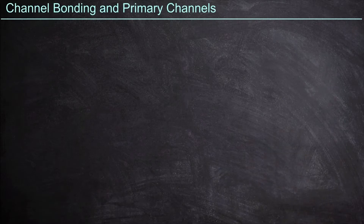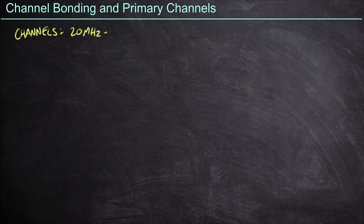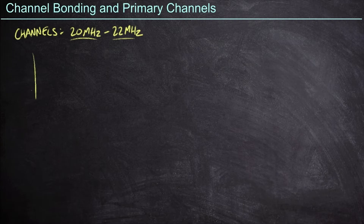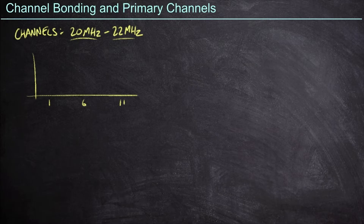So how exactly does this channel bonding process work? For the most part in the wireless world, we have channel sizes of what we would call 20 megahertz. In the 2.4 gigahertz space, this is actually 22 megahertz, but we typically call them 20 megahertz channels. The goal here is to take two adjacent channels and bond them together. In the 2.4 gigahertz space, for example, I've got channels 1, 6, and 11 as my primary non-overlapping channels, and I can take two of these channels and bond them together.